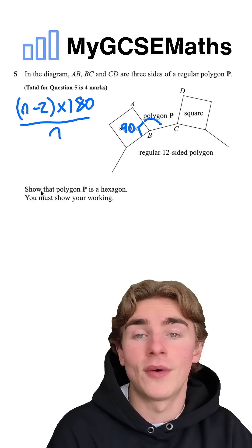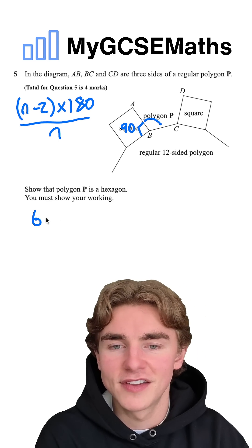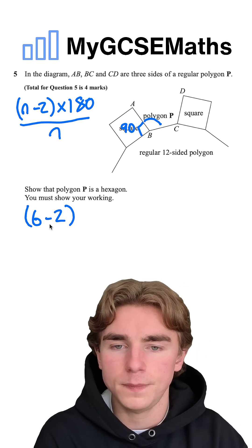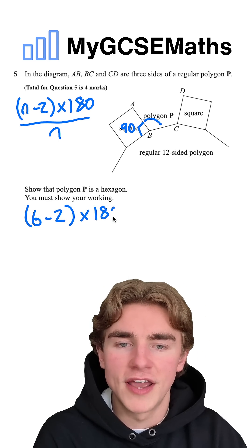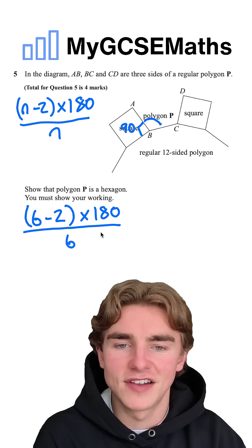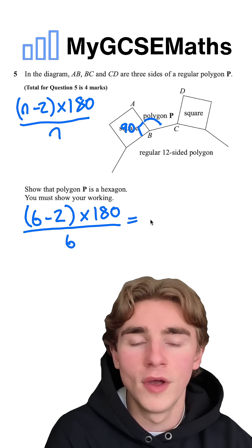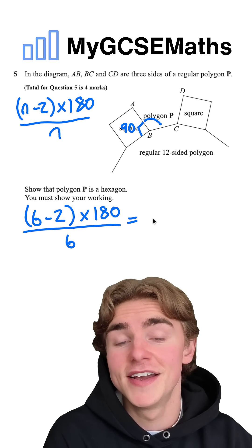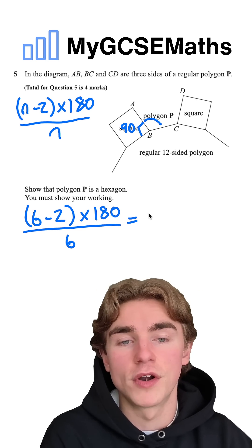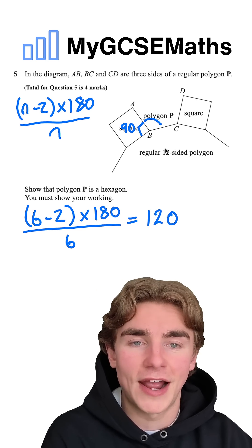We know that for a hexagon we have six sides, so working out an interior angle we can do six subtract two times by 180 divided by the number of sides, which is six. Six minus two is four, four by 180 is 720, 720 divided by six is 120. You can absolutely use your calculator for that.